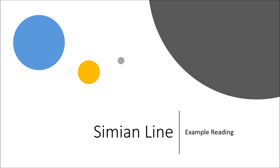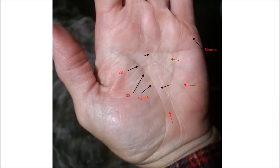And this recording is about other lines when there are simian lines. So here is my example. This is a lady's hand. She has simian lines double. I'll show you the other hand shortly.